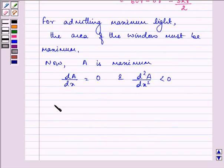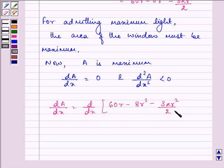Let us first find out the derivative of the area, that is, d by dr of the area, that is, 60r minus 8r square minus 3 pi r square upon 2.